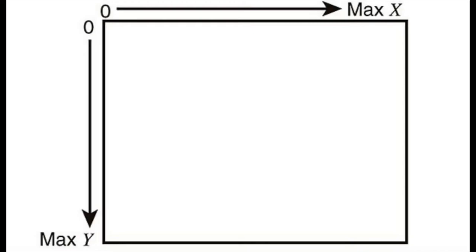The XY coordinate system is how most programming languages describe the layout of pixels on a screen, based on the Cartesian coordinate system but using only positive numbers. X is the position in the row, counting across to the right; Y is the position in the column, counting down from the top. Combining the two describes the location of one pixel — for instance, XY(3,6) means the pixel in the 3rd column, 6th row.